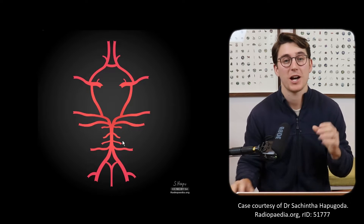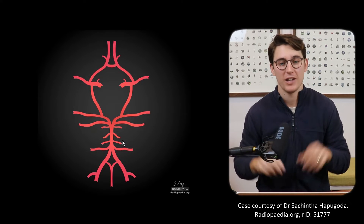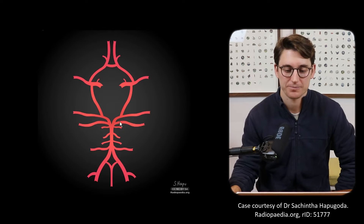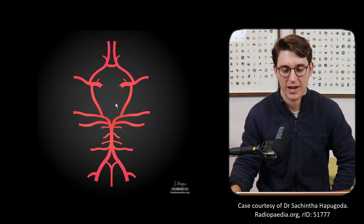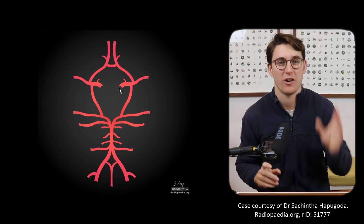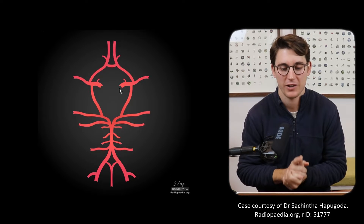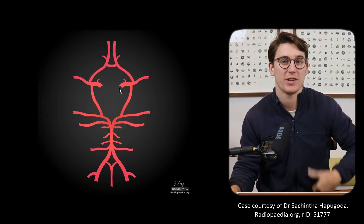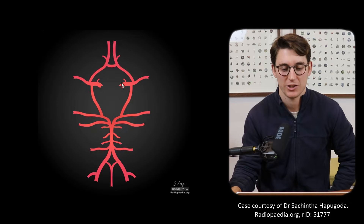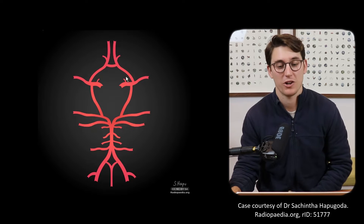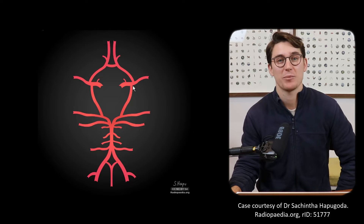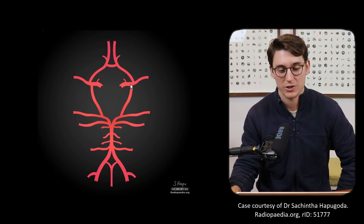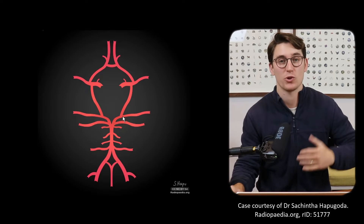We also have arteries coming off the basilar giving blood to the pons. For the anterior circulation, we have our internal carotid artery - I'll link a full video above - coming in to supply blood to the anterior circulation. We can see the ophthalmic artery coming off segment 6, then into segment 7, our posterior communicating artery.